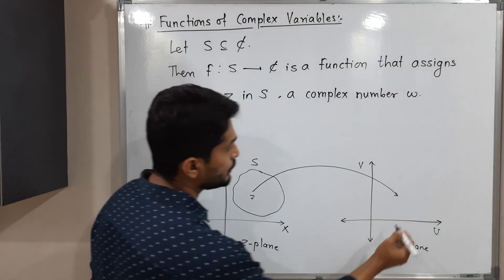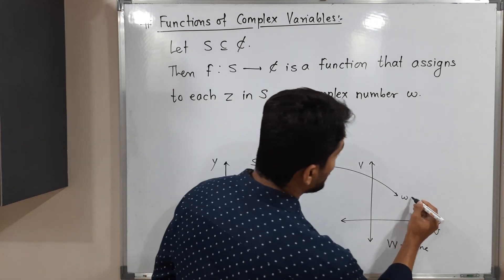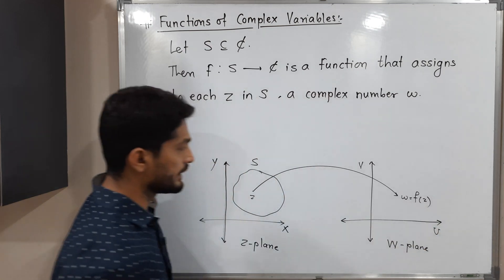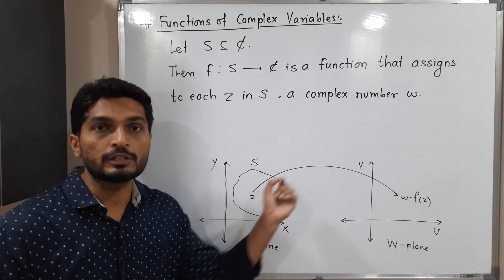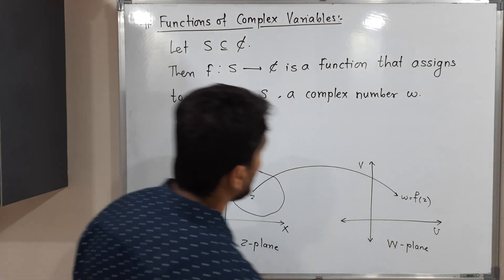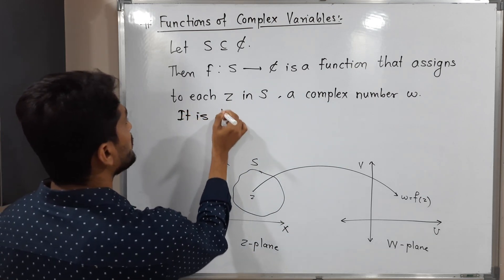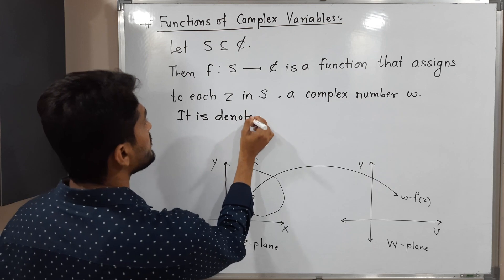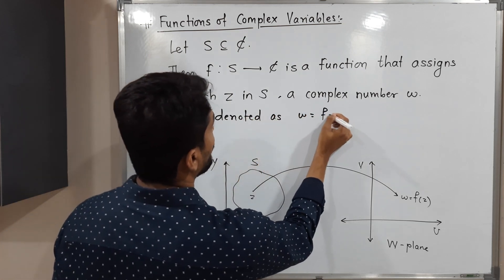We call it W, and we denote it as W = F(Z). That means for each point in S, we will have its image in the W plane. It is denoted as W = F(Z).